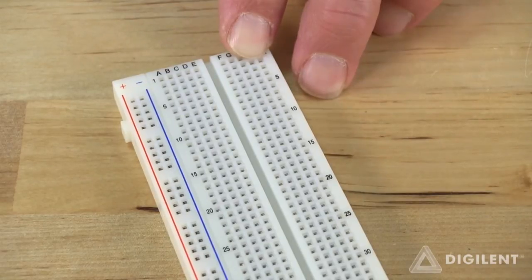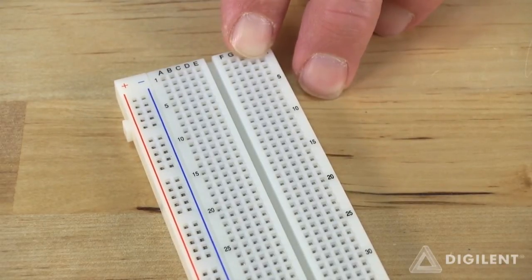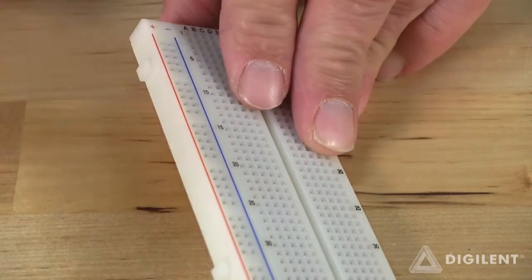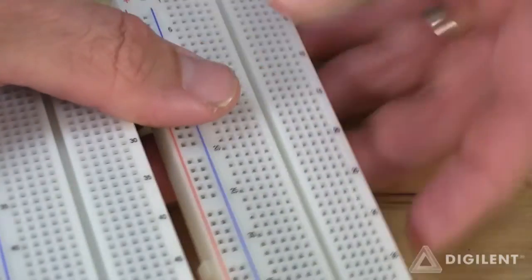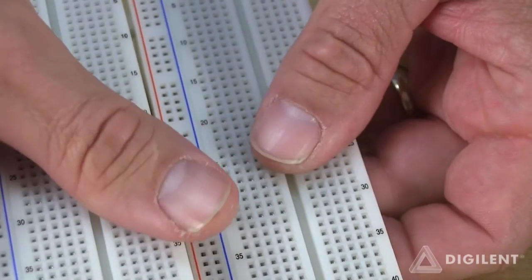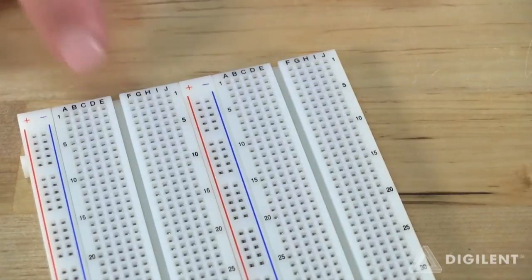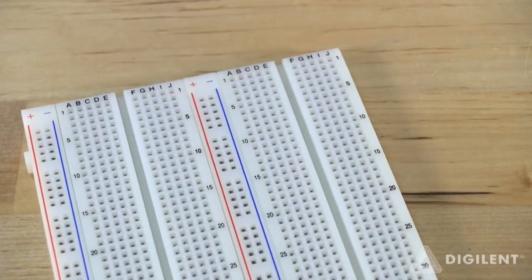It's also common to have larger breadboards which are essentially several of our smaller breadboards clipped together. This breadboard, for example, has tabs on the side which make it easy to combine breadboards. The new breadboard has twice as many holes and four bus strips rather than two.